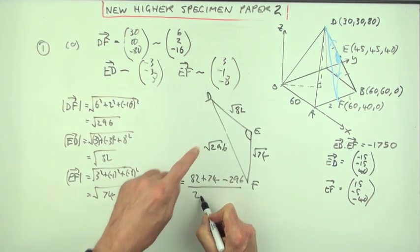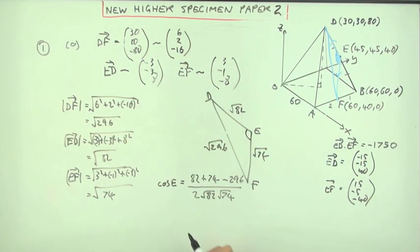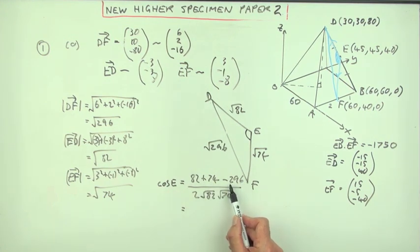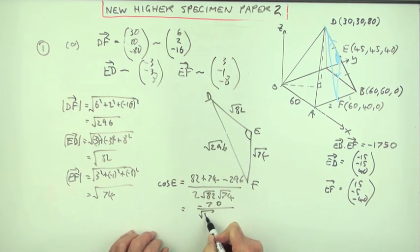Over two times the length of that, root 82, root 74. Well that's 156. Away from that will be negative 140. The two will cancel that down to a negative 70. Over the square root of 82, 74.